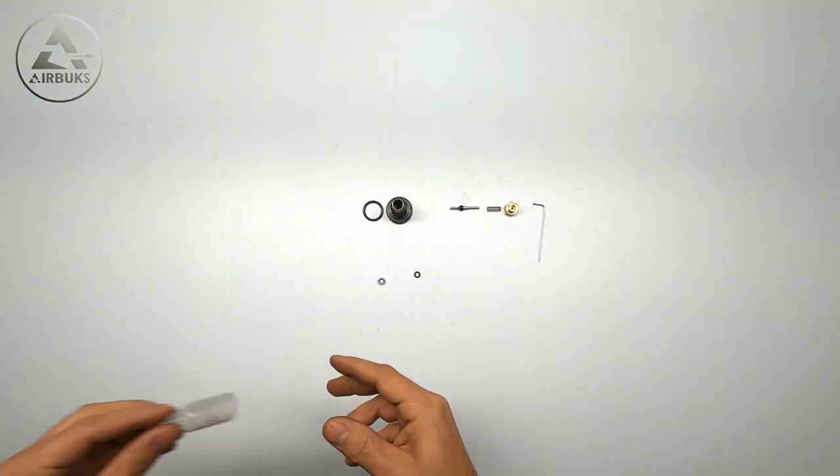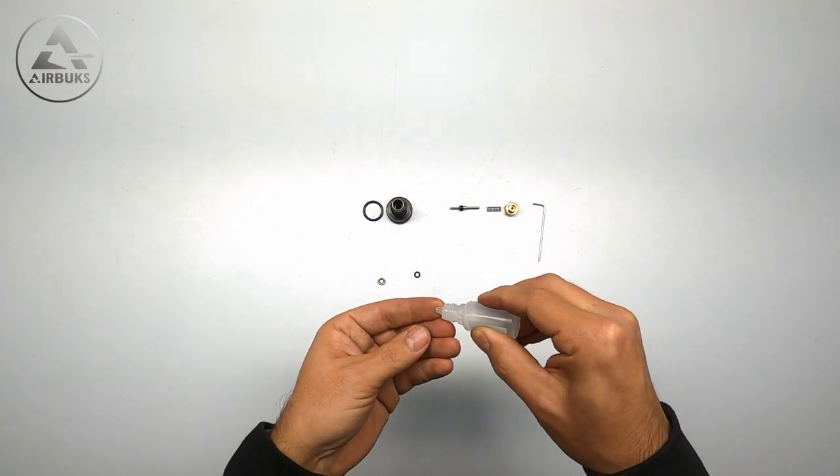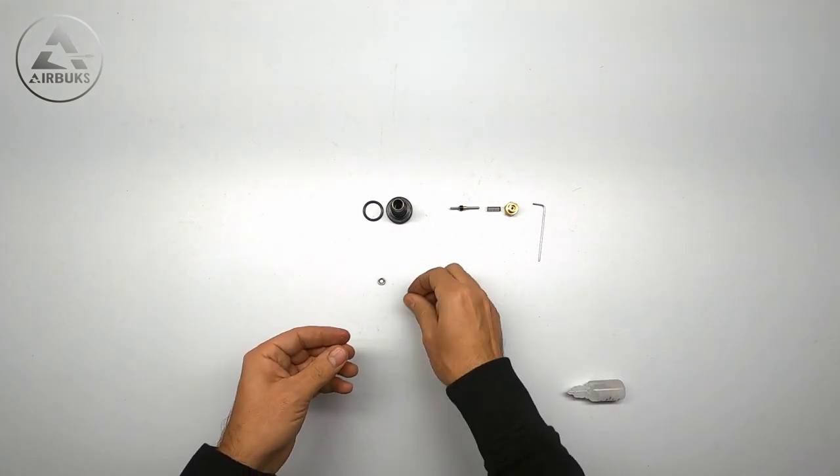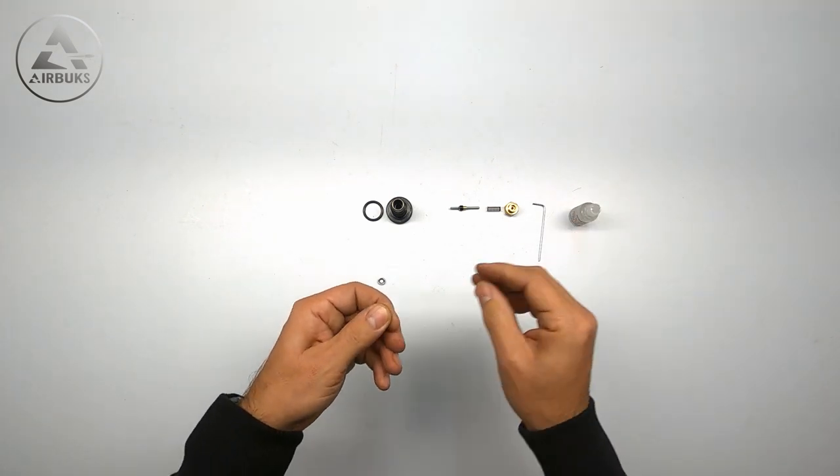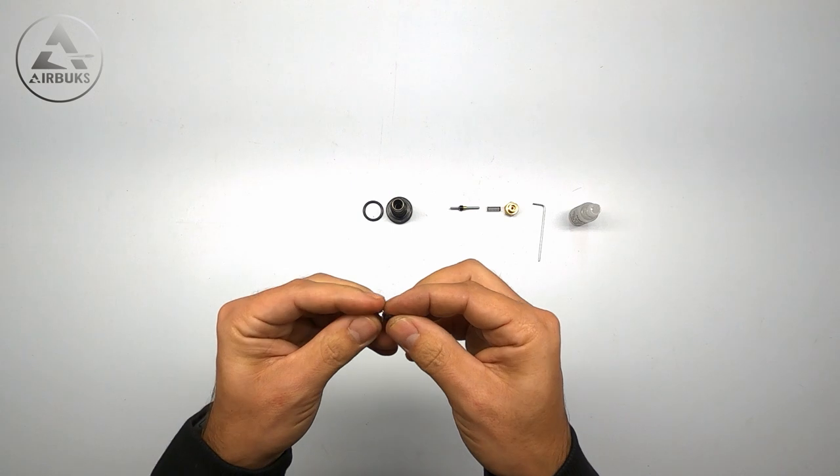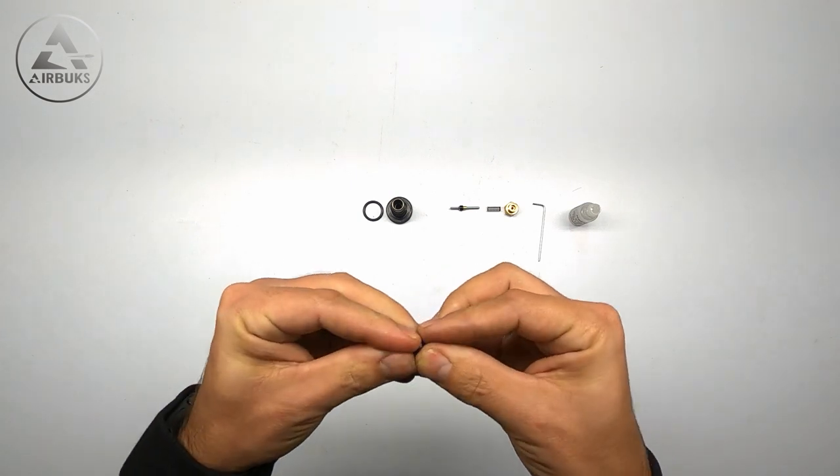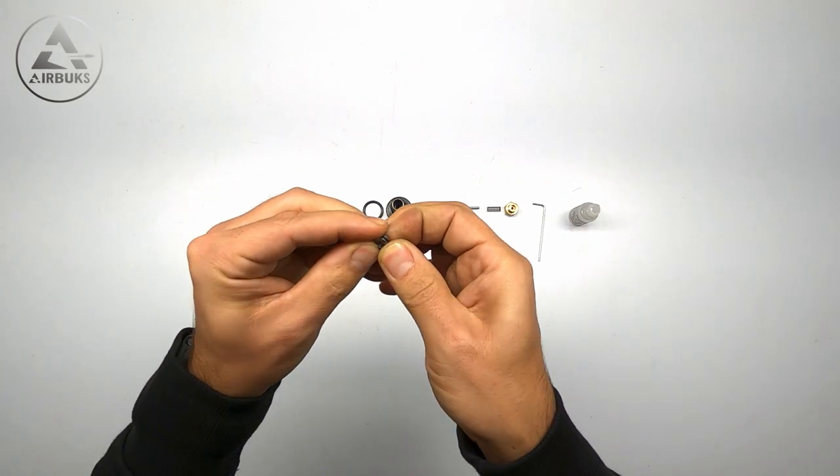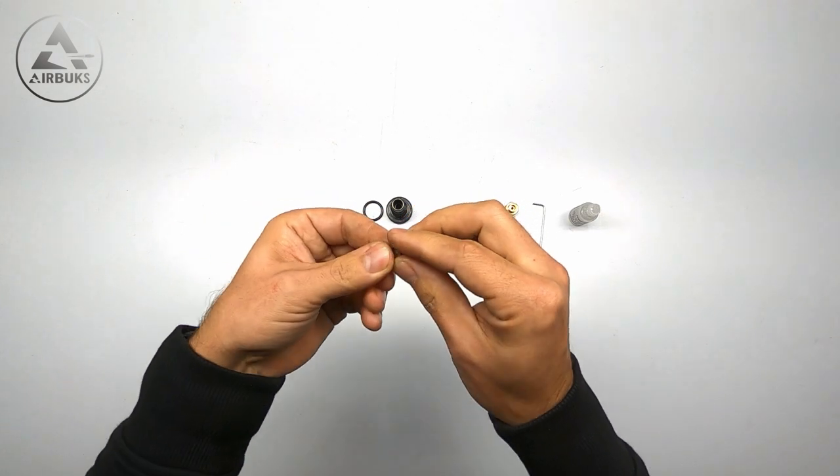So take a little bit of lube on my finger. Lube the o-ring a little bit. Put it in place just like this.